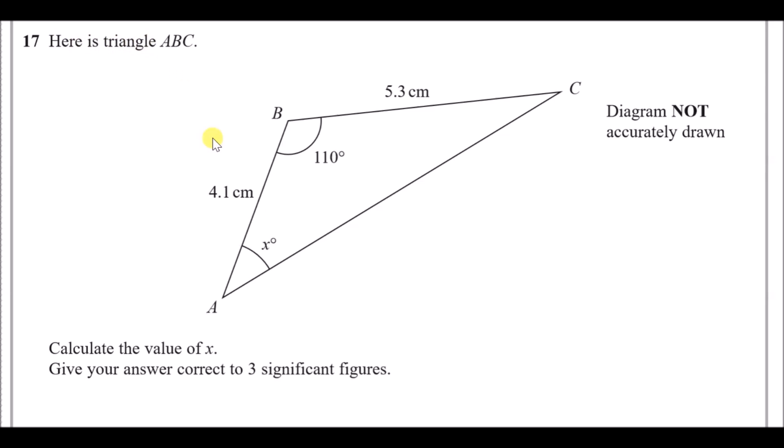Here we have triangle ABC and we need to calculate the value of x. Notice that x is opposite this length here, but opposite the angle there is no length and opposite this length there is no angle. If we take it one step at a time, we can use the cosine rule to find this unknown length, then we'll have a matching pair of length to angle to use the sine rule.